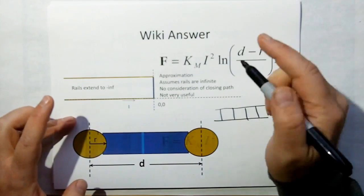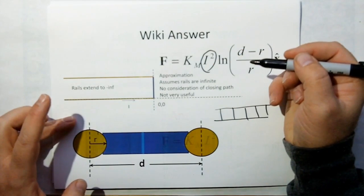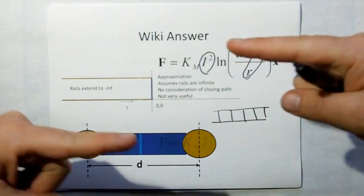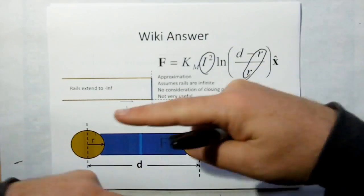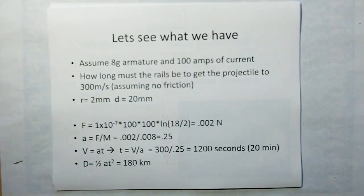So you've got two competing factors. You need current, which means you need a big rail to carry it. But you also would like to have small rails. And so you've got conflicting design goals here.